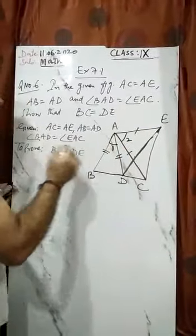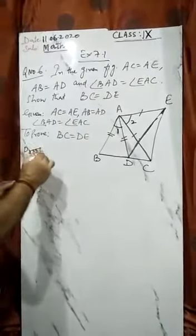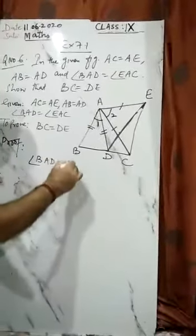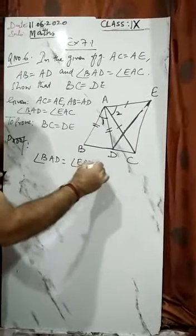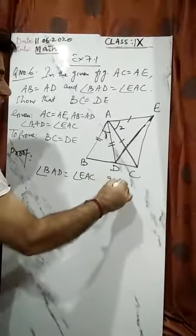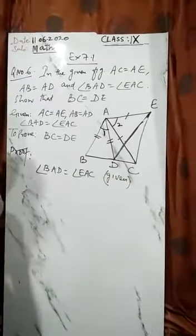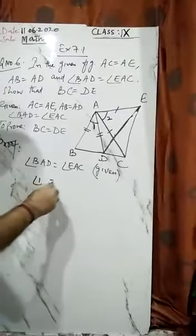So let's start the proof. See, angle BAD and angle EAC are equal because it is given to you. Now BAD I've mentioned as angle 1 and EAC as angle 2, so 1 and 2 are equal.